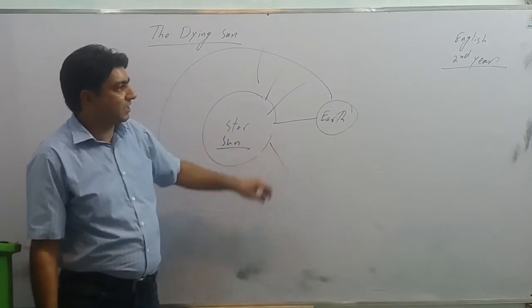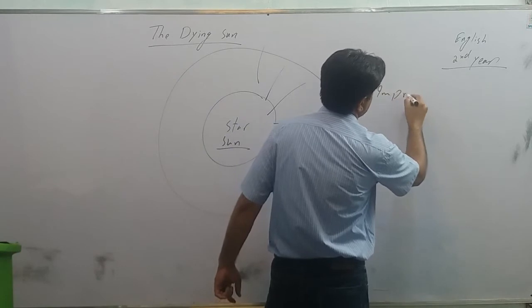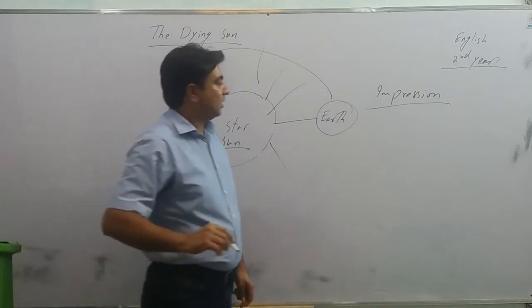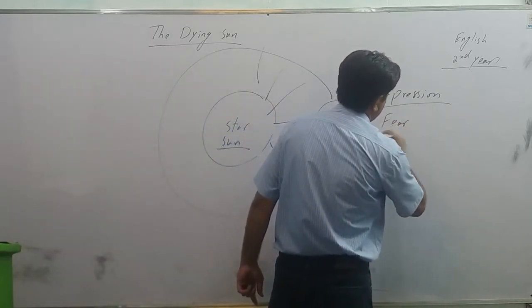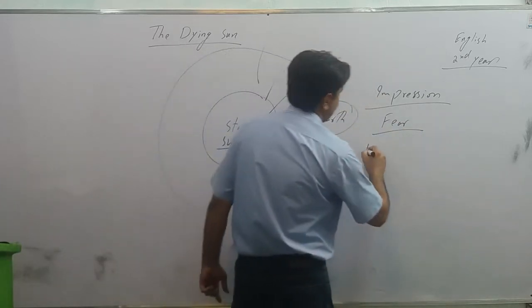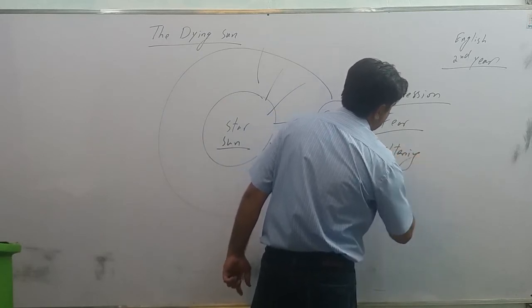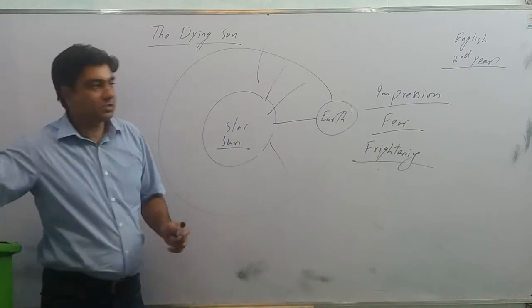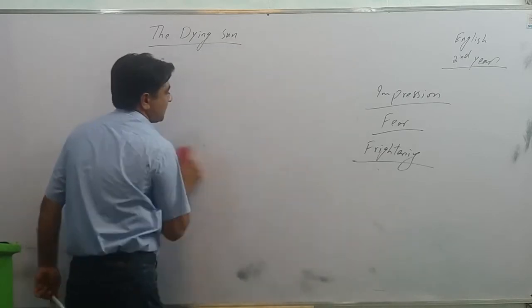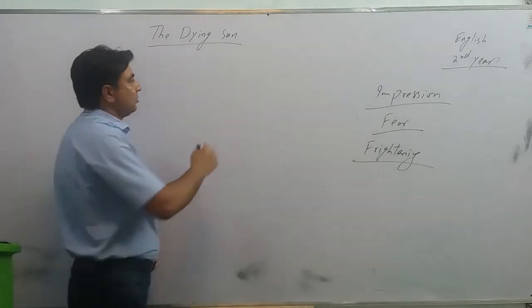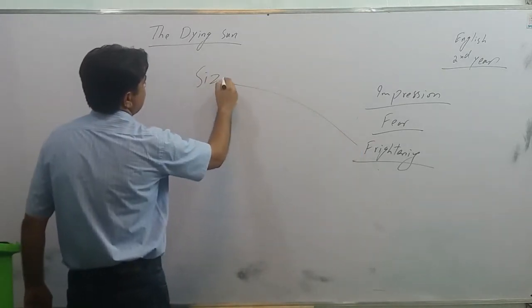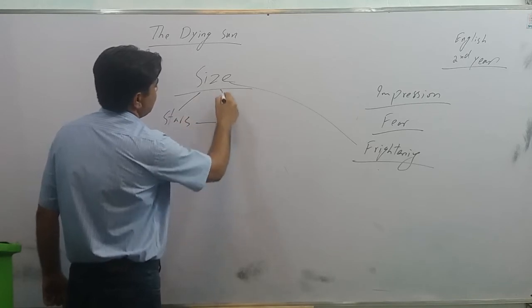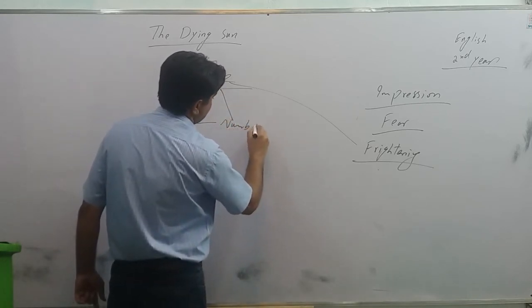So he says finally that what is our impression? What is our impression when we come to know so much about the universe? Our impression is fear. The universe is frightening. Why is the universe frightening? The universe is frightening because of its size, in size, size of stars, number of stars, and distances. The universe is so big, immense, that it frightens us.